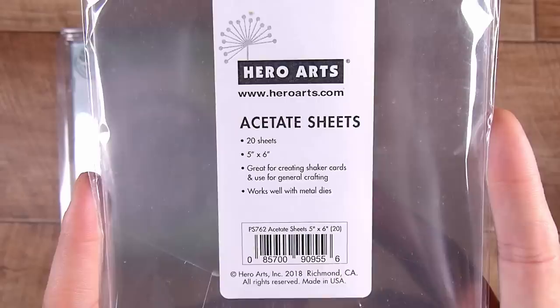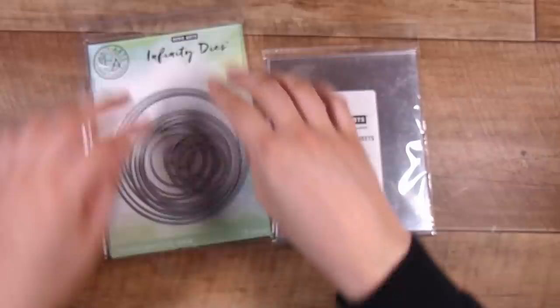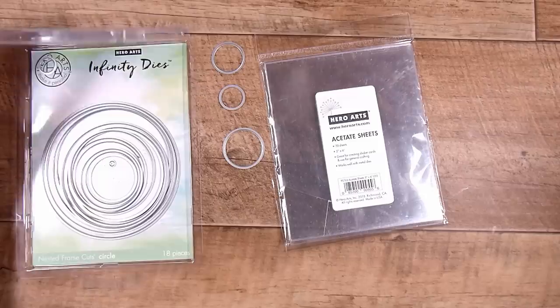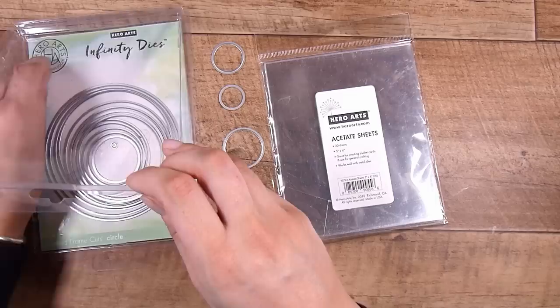And then this is where I'm going to make my own stencil. I like these Hero Arts acetate sheets. Down the bottom there you can see it says works well with metal dies. Some acetate will cut really nicely and some will not. Don't particularly ask me why, but when I found a good one I tend to stick with it.